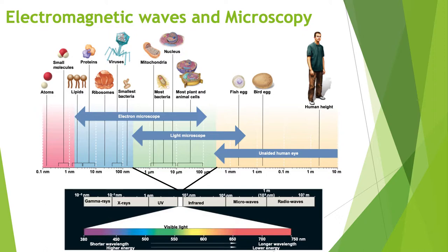At some point, no matter how many lenses or how much magnification you add, you won't be able to see something any better, because the wavelength of light needed is too short to use visible light anymore. So scientists developed a different tool: electron microscopes.